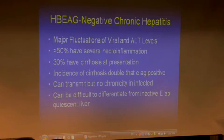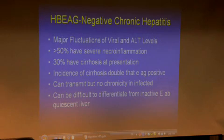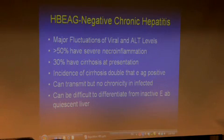The theory behind this virus is that immune stimulation — by drugs or by the body — selects for the wild-type virus, and many viruses mutate to survive. The mutant does not replicate as well as wild-type, but because wild-type is eliminated, the mutant virus levels rise. Characteristically, ALT levels and viral DNA tend to fluctuate. This virus runs a course about 100% worse than e-antigen-positive wild-type patients — more than 50% have severe inflammation and 30% have cirrhosis at presentation. Interestingly, this virus can be transmitted but does not transmit chronicity.